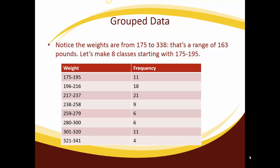Then after I've set up my class widths, then I went back and I looked at how often did each of these class widths occur. So you can see the numbers in there. 11 of the players were 175 to 195, 18 were between 196 and 216, 21 were from 217 to 237, 9 were from 238 to 258, 6 in each of the categories of 259 to 279 and 280 to 300, 11 between 301 and 320, and then just 4 from 321 to 341.